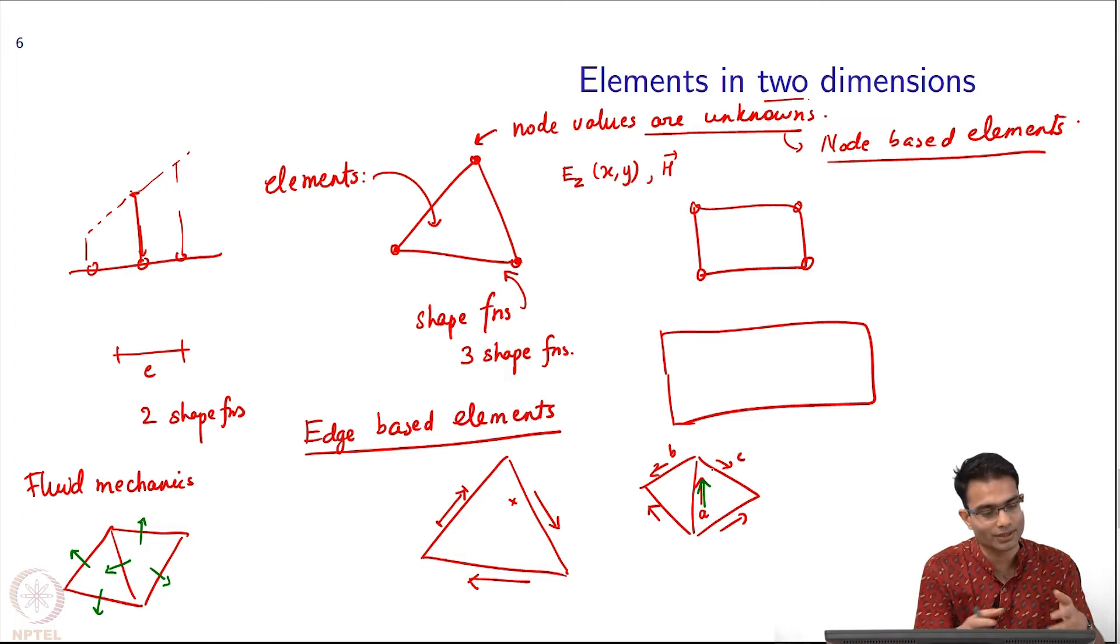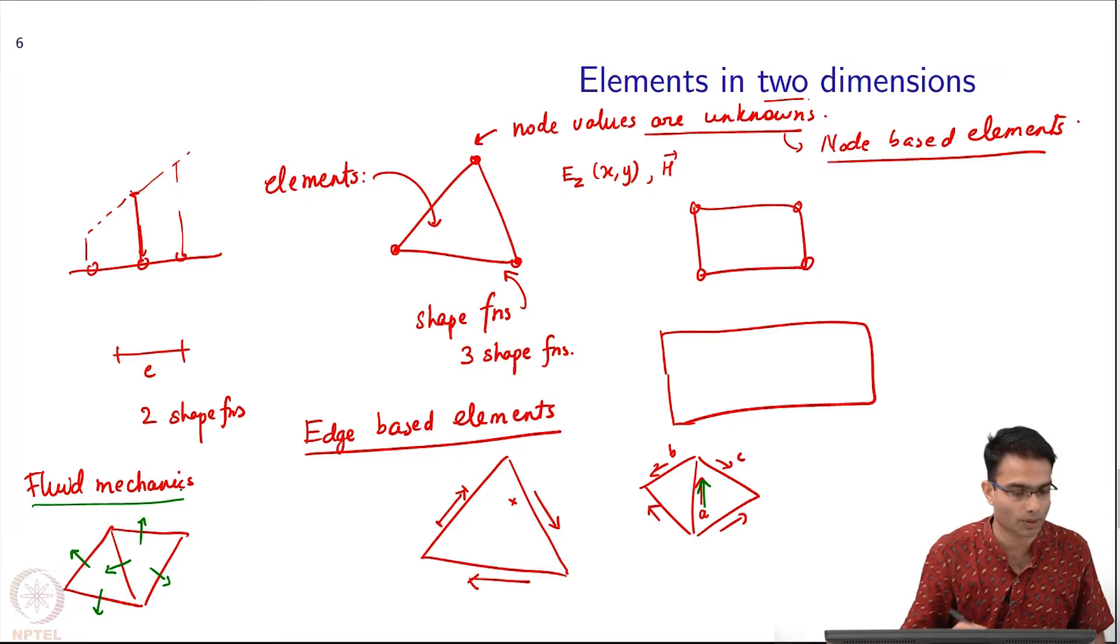In the electromagnetics case, this arrow is ensuring which property of Maxwell's boundary conditions? Tangential continuity. We are building it into the way we design the elements itself, so you get it for free. Similarly, you do a different construction, you get the fluid mechanics case - the normal component is conserved. You build it into the solution, you do not have to do something extra to get this property.